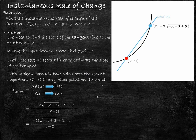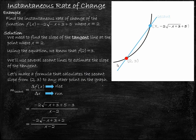Before we start using this formula, let's think about what it means. This formula represents a secant slope — when we substitute in x values, the output is a slope: the slope of the line from (2, 3) to some other point on the graph. So if we choose an x value of 4, for example, substituting 4 into our formula gives us the slope of the secant line from the point where x is 2 to the point where x is 4.